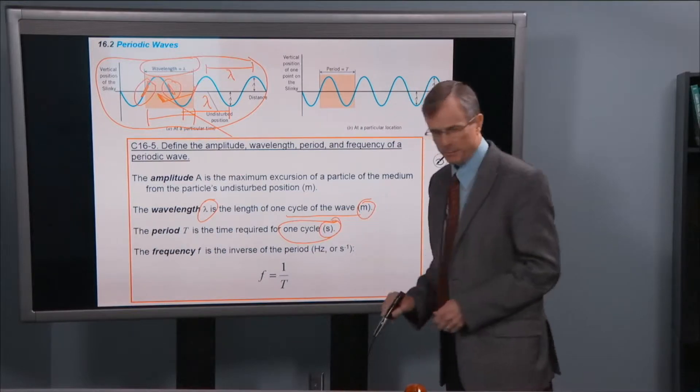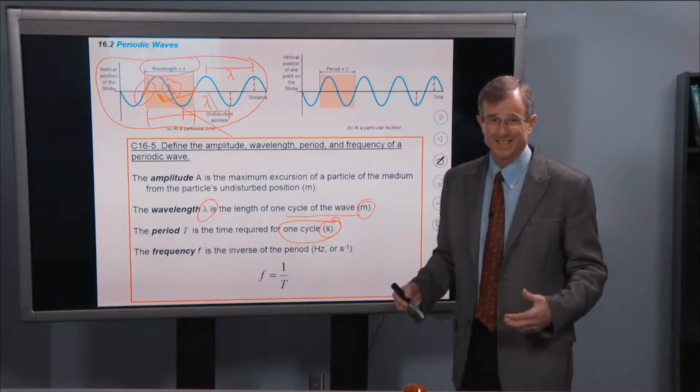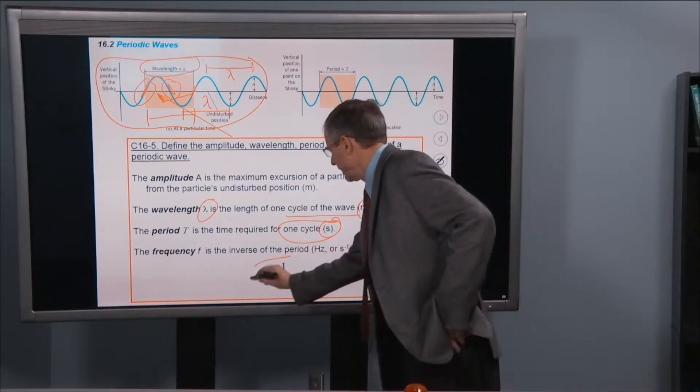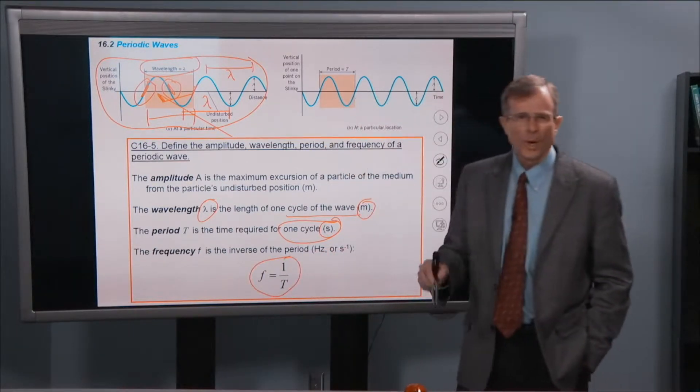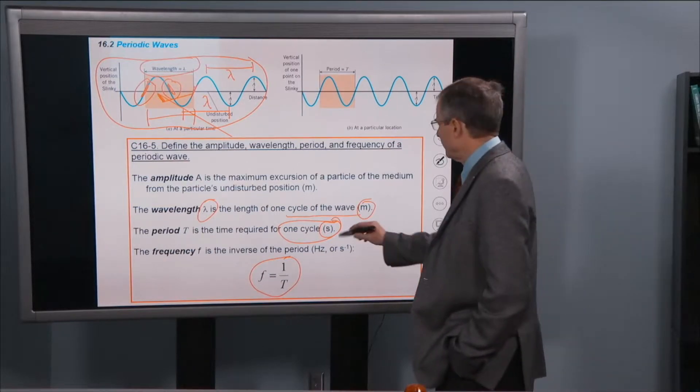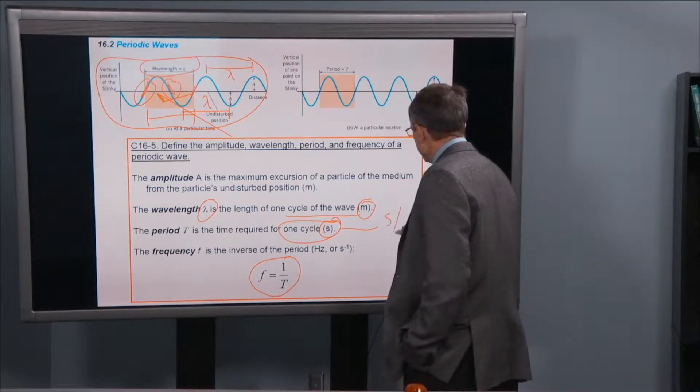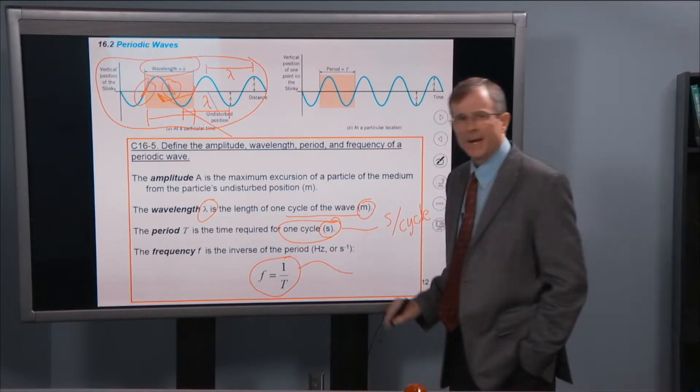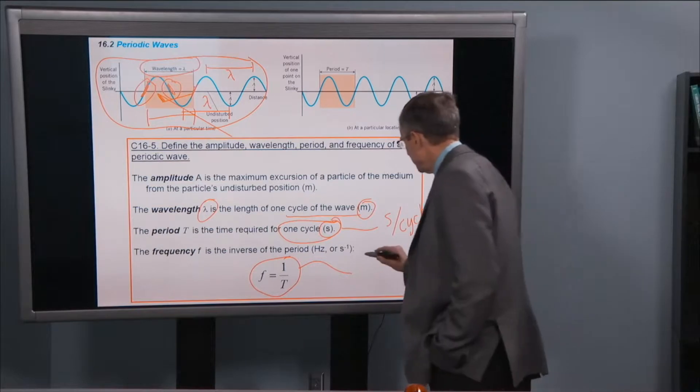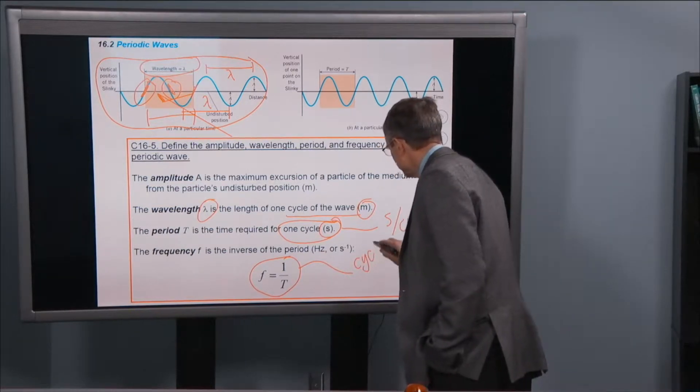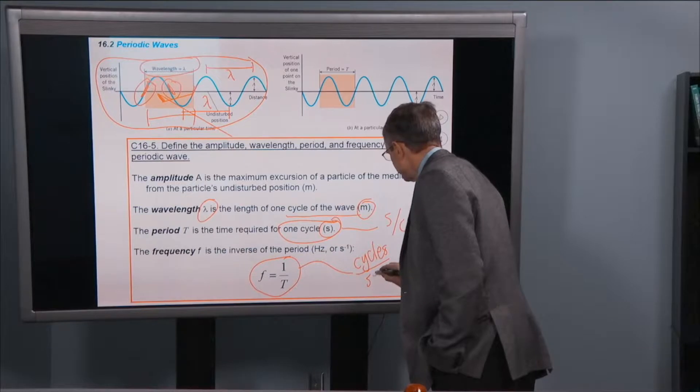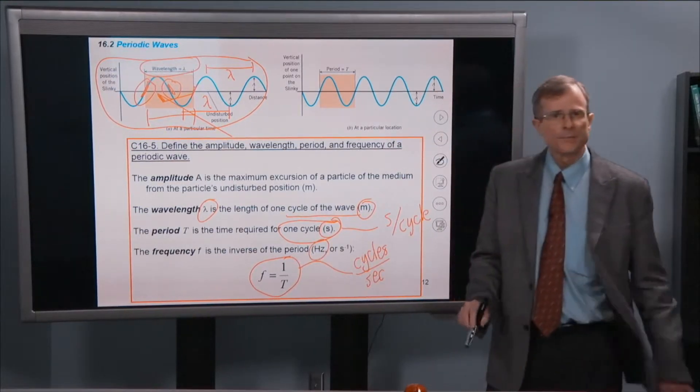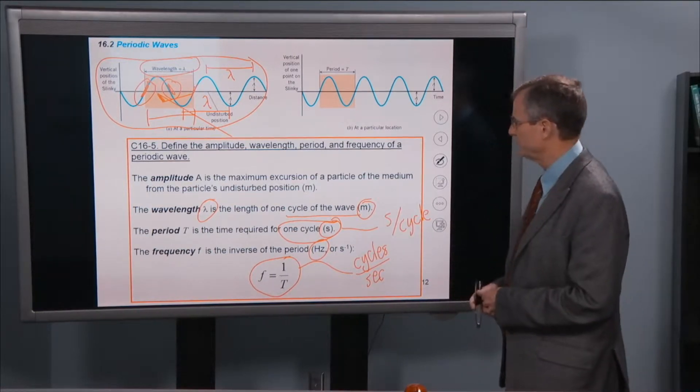So that's the period. It's measured in seconds. So I always remember that the period is measured in seconds so I don't get confused with the frequency. What is the frequency? As we talked about last semester, it's one over the period. So if the period is the number of seconds per cycle, if we take one over that, then the frequency is going to be the number of cycles per second. And that is the unit of the hertz, which you'll remember from last semester.